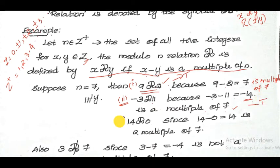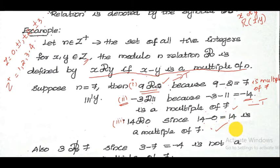Third example: check whether 14 is related to 0. We compute: 14 minus 0 is equal to 14, which is also a multiple of 7. So therefore this is also true.